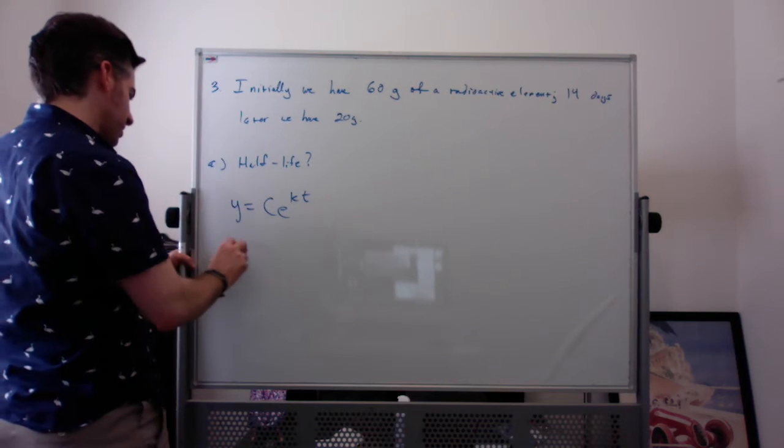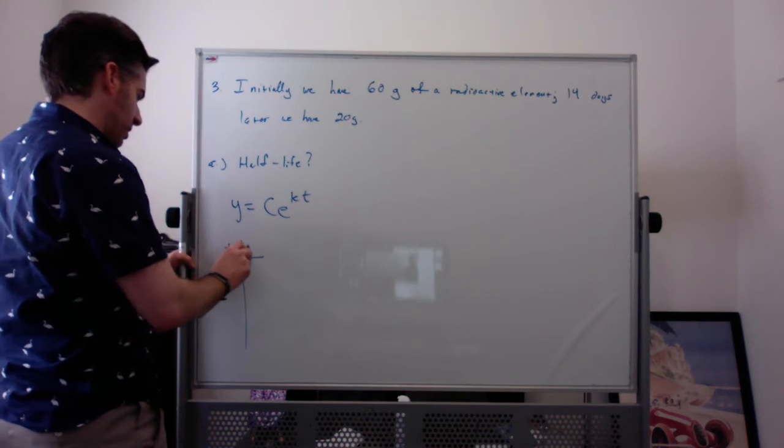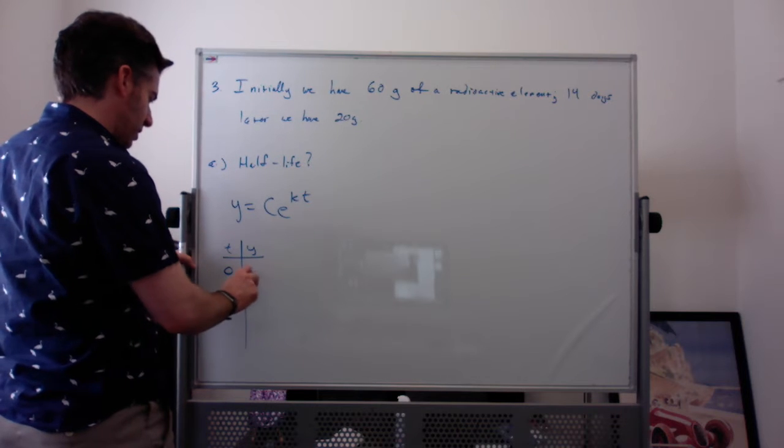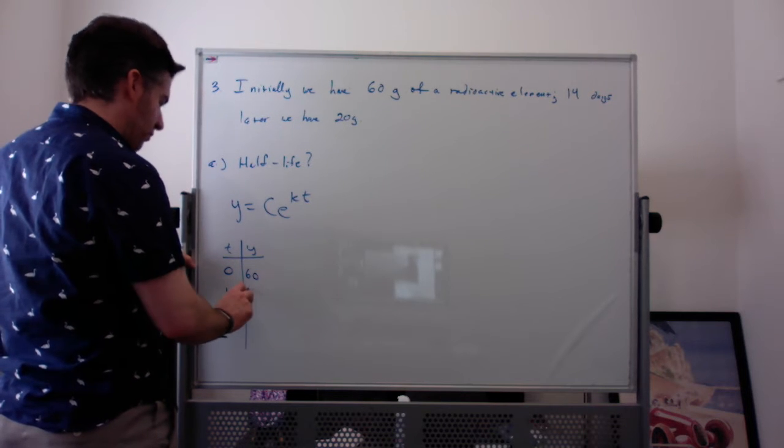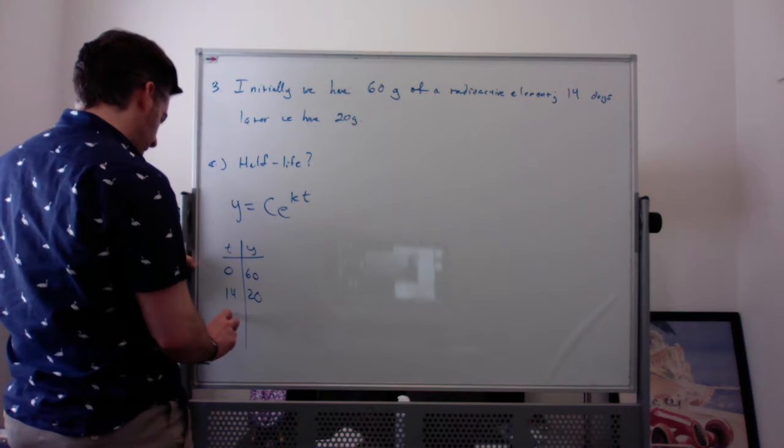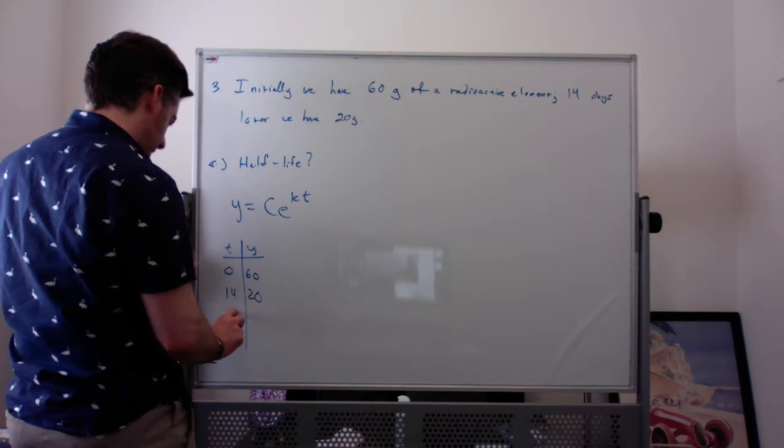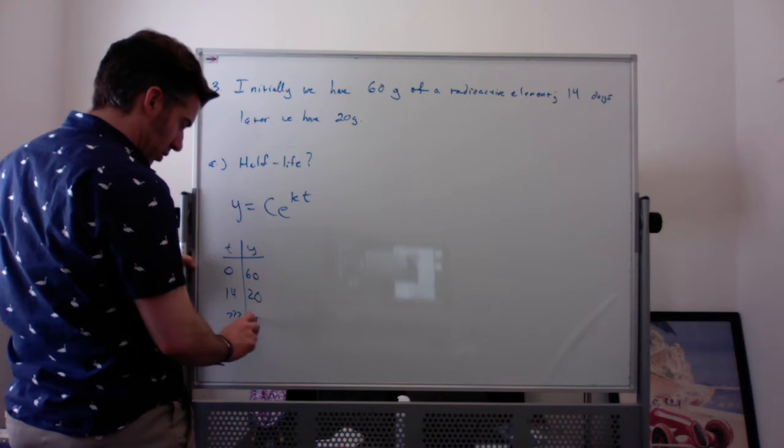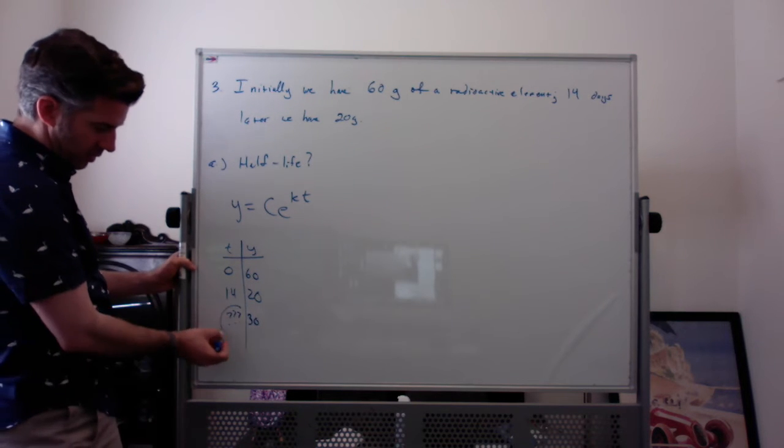You could also plug in a little table where you can say t, y of t is 0, you have 60. If t is 14, you have 20, and then we're trying to figure out what time it is when I have half of what I started with, which is 30. So I'm trying to figure out what this is.